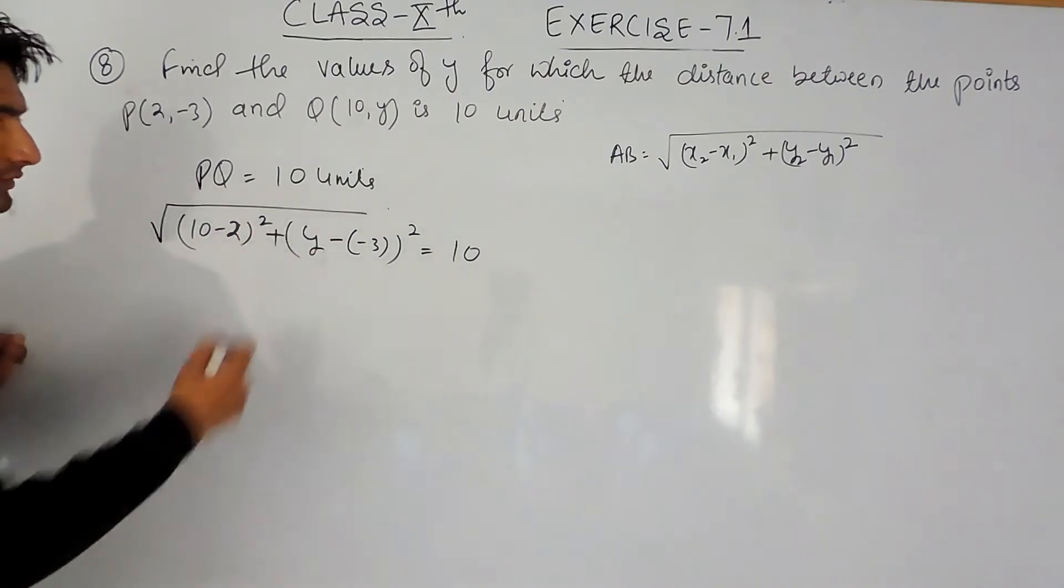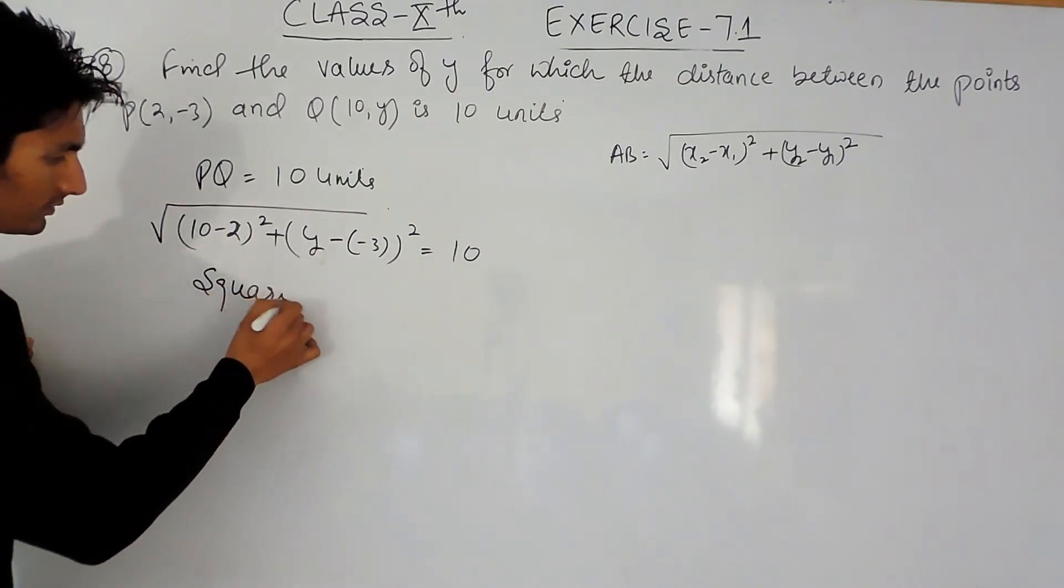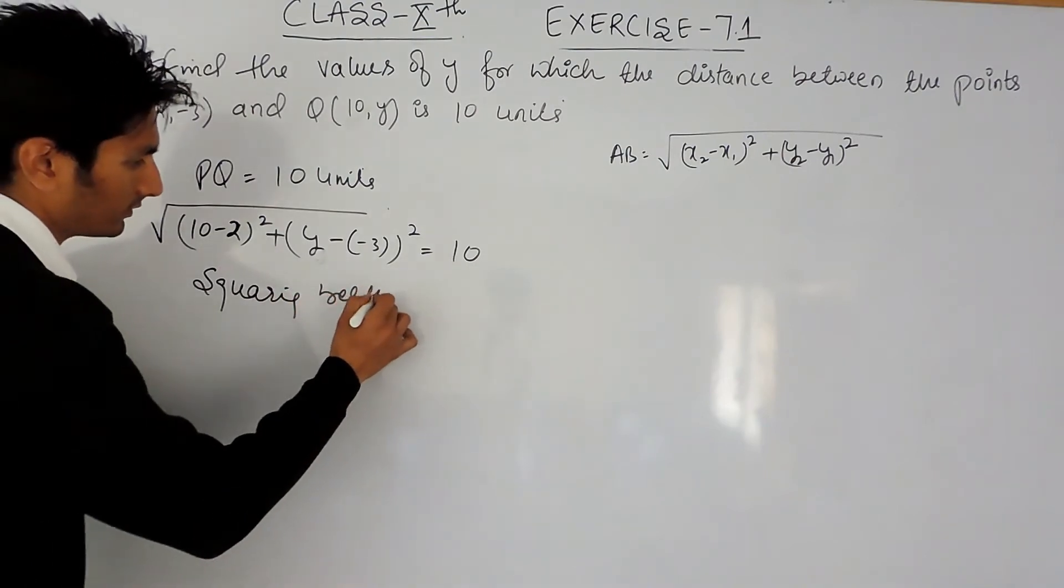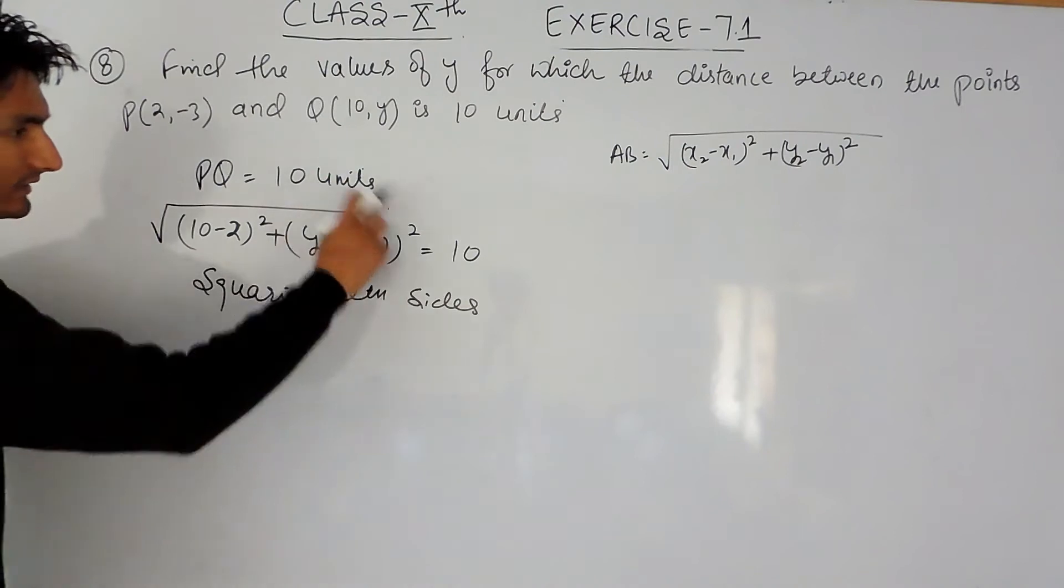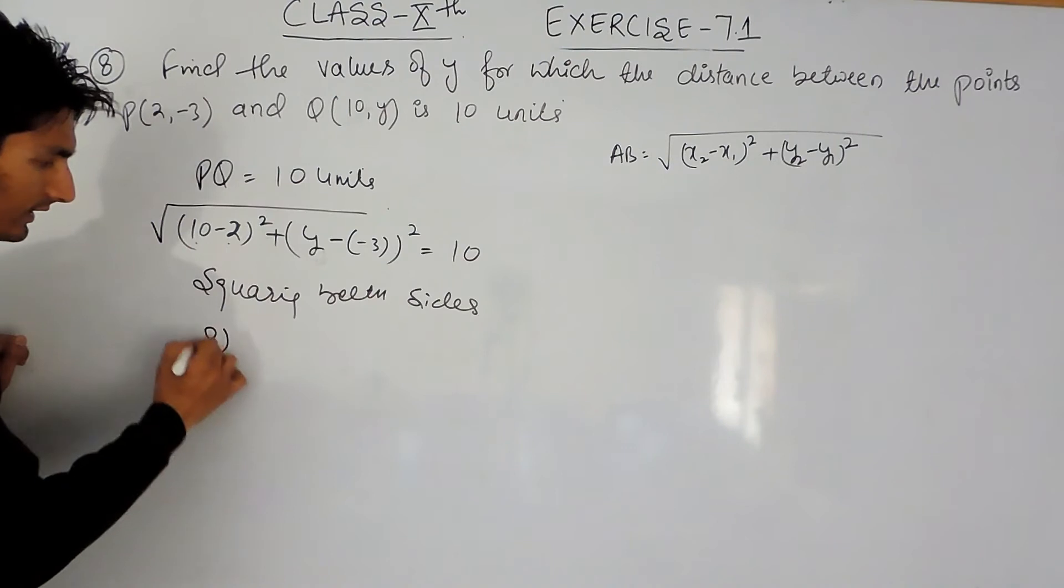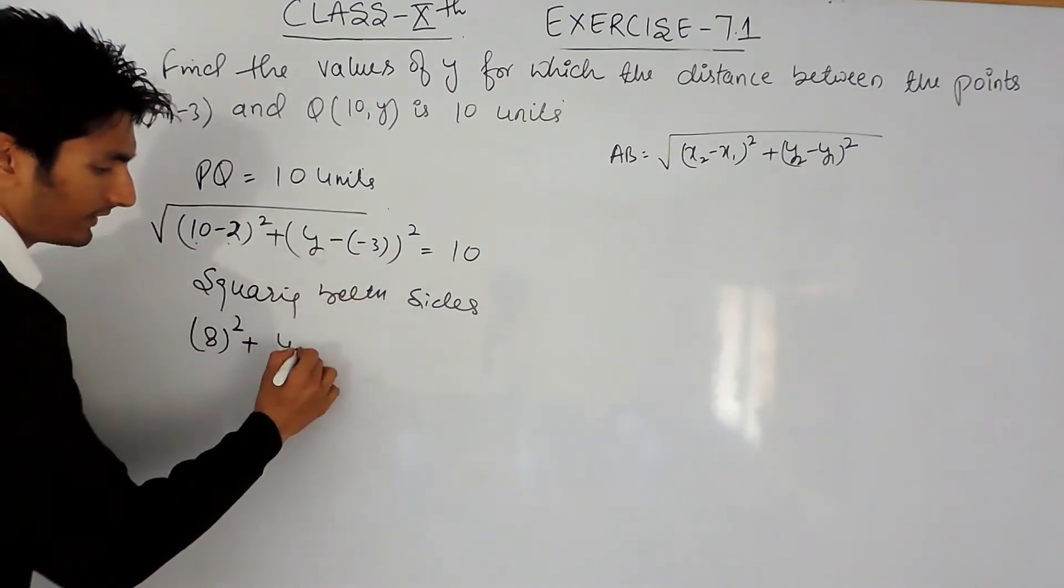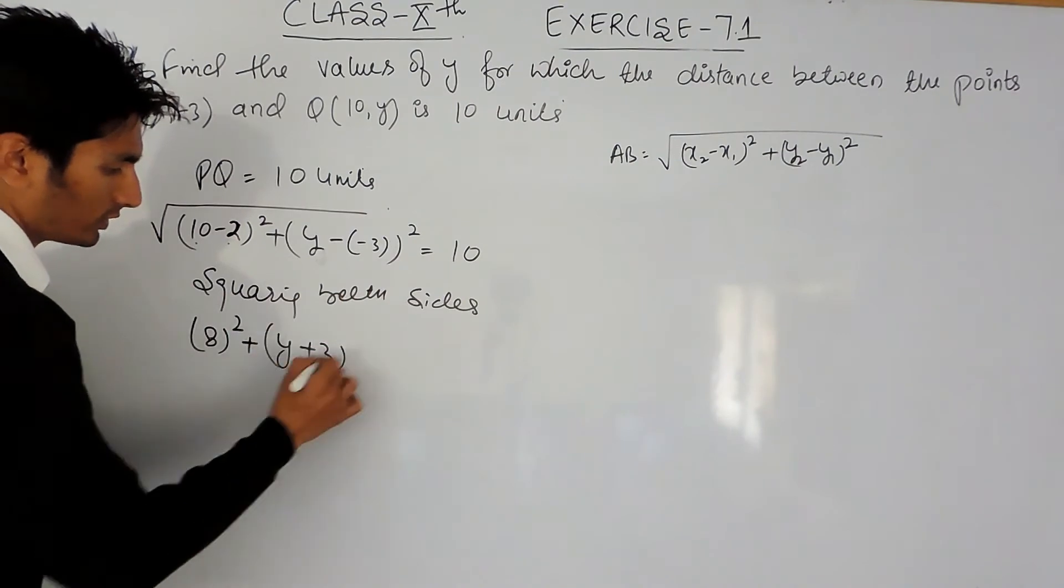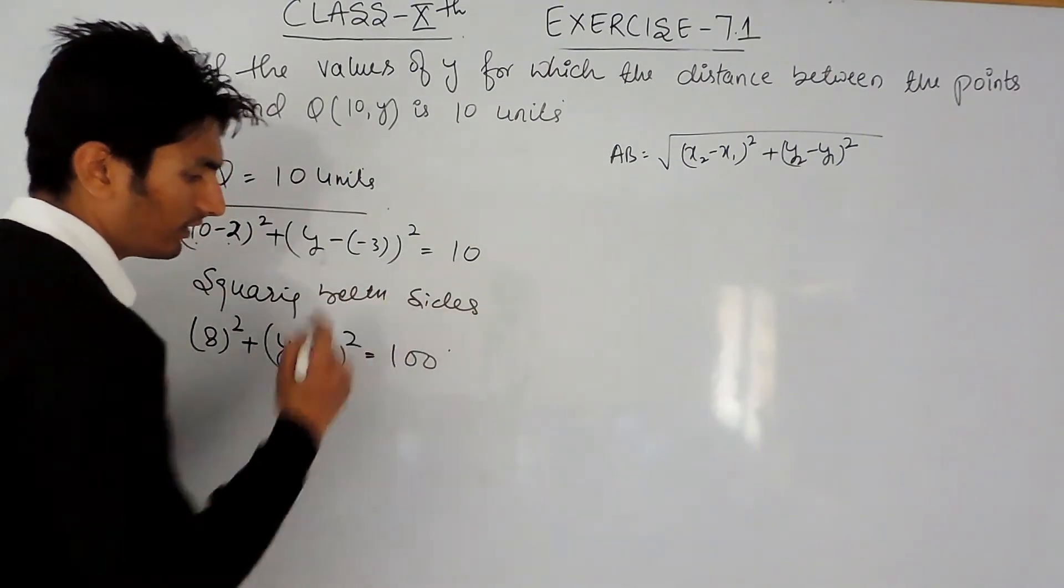We have to remove the under root, so squaring both sides, square and under root will be cancelled out. So 10 minus 2 will be 8 square and plus y minus minus is plus 3 whole square, and on the right hand side, squaring 10 will give me 100.